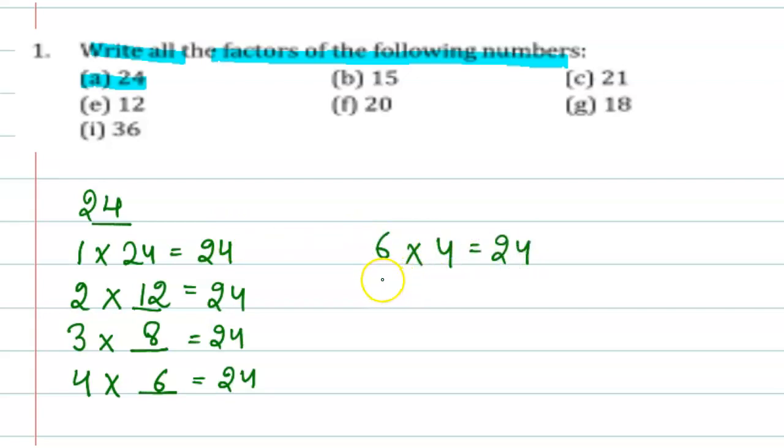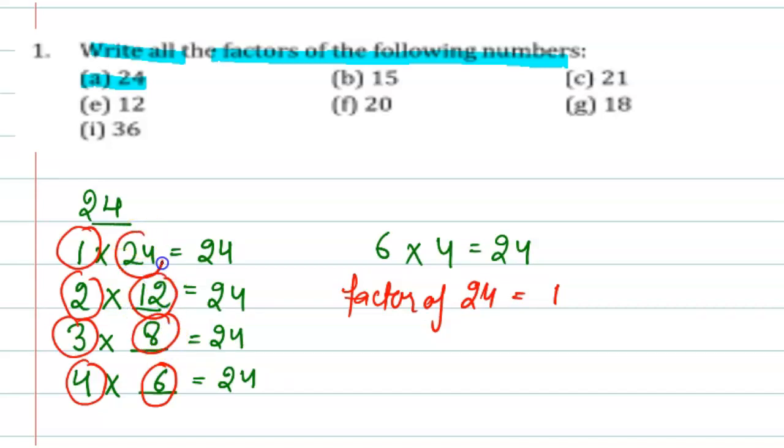And next you can see that here 6 again appears. So we will write here the factors of 24 is 1, 2, 3, 4, 6, 8, 12, and 24.